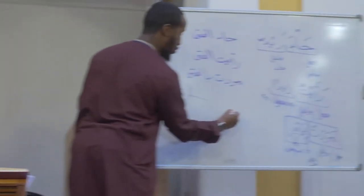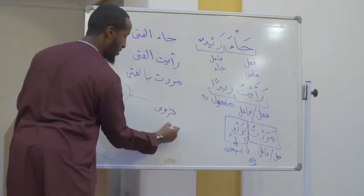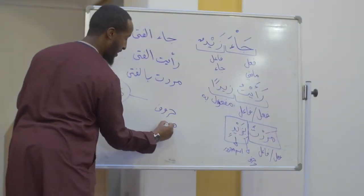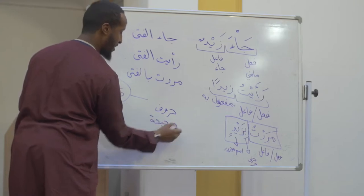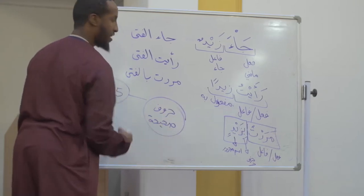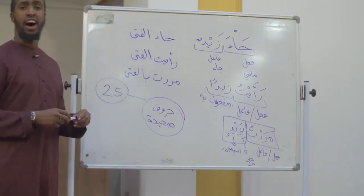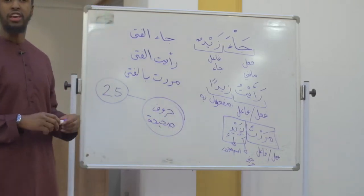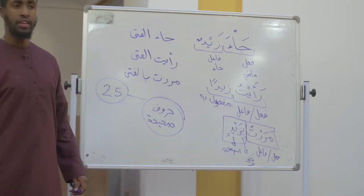These 25 letters in Arabic are called Huruf Sahihah. They are Huruf which is Sahihah — they are healthy, good letters.